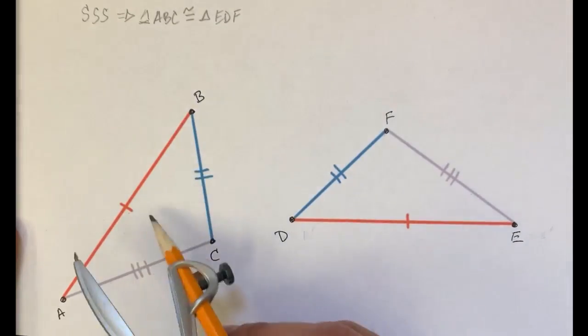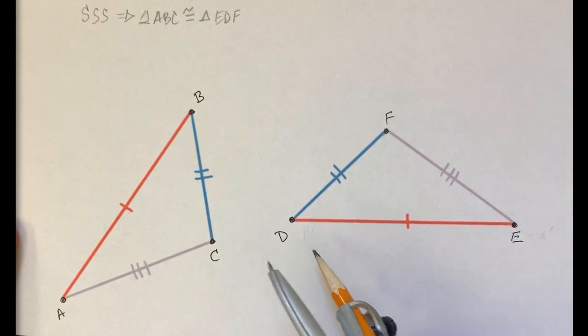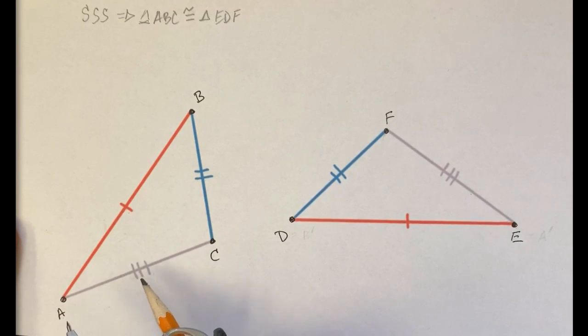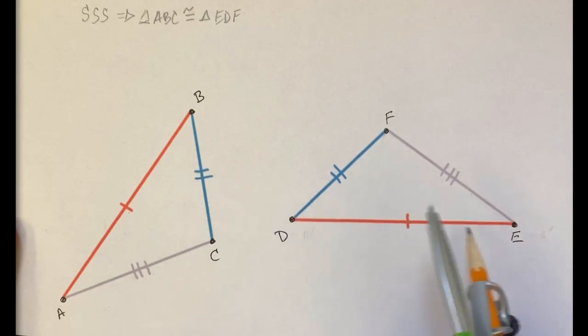Then we can deduce that these two triangles are congruent to each other based on the rigid transformation definition of congruence. And to show that, we just have to show that there's always a series of rigid transformations that maps triangle ABC onto triangle EDF.